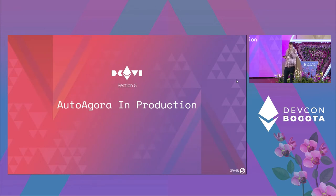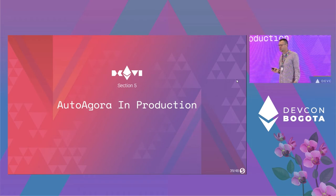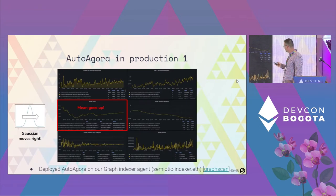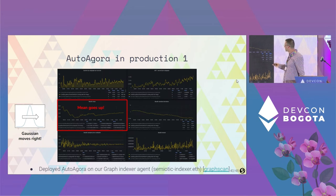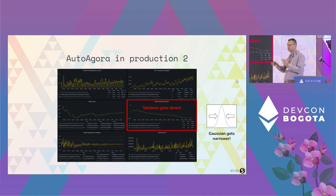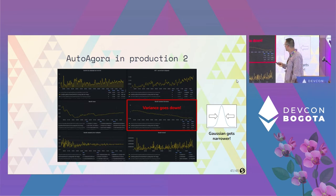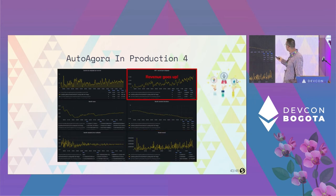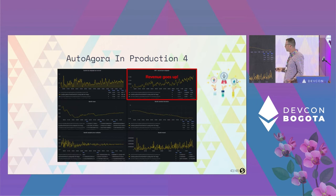With these results, we deployed the solution in production. The mean starts high and comes down, then steadily goes up. At the same time variance steadily decreases — the Gaussian narrows — meaning agents become more confident in their price estimate. The outcome is that reward goes up: total revenue has a clear upward tendency. We deployed Auto Agora and the results were great.